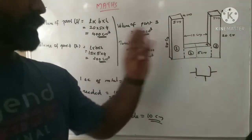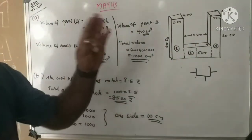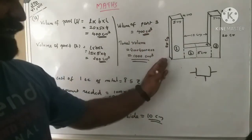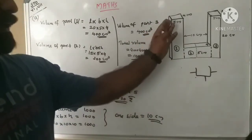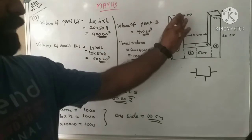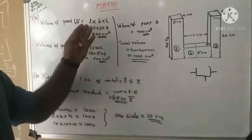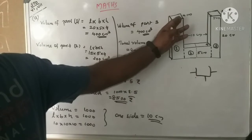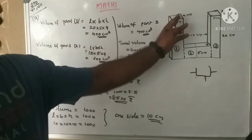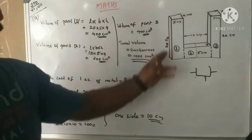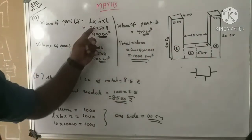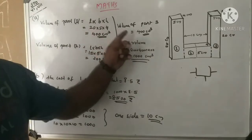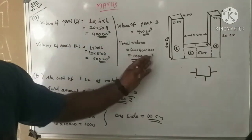For part 1, using this metal piece: one side is 20, length is 5 and 4, height is 20. Then multiply 20 into 5 into 4, which is equal to 400 cubic centimeters.